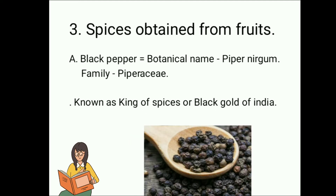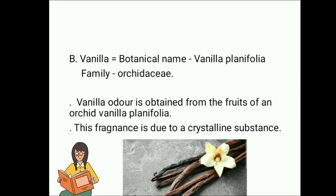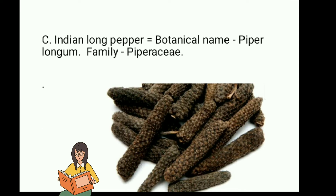Spices obtained from fruits. A. Black Pepper — botanical name Piper nigrum, Family Piperaceae. Known as king of spices or black gold of India. B. Vanilla — botanical name Vanilla planifolia, Family Orchidaceae. Vanilla odor is obtained from the fruits of the orchid Vanilla planifolia. This fragrance is due to a crystalline substance. C. Indian Long Pepper — botanical name Piper longum, Family Piperaceae.